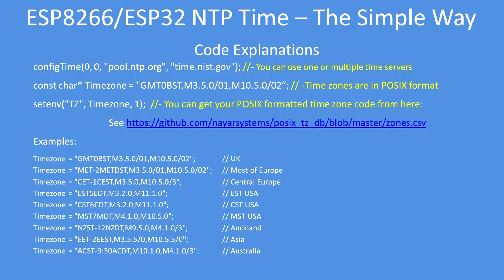To format time you need a POSIX format timezone code. You can visit the web page linked where most references are held, but I've listed the most common ones for most parts of the world from the POSIX master database. Your variable called timezone needs to contain that string — in my case it's GMT zero hours and British Summer Time.